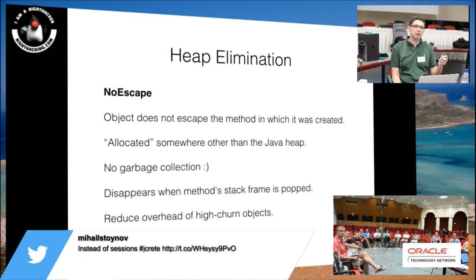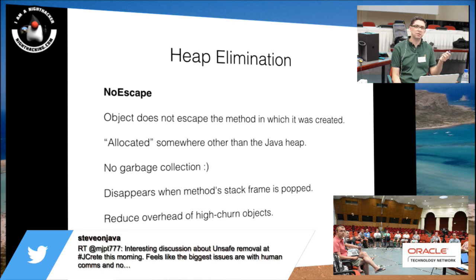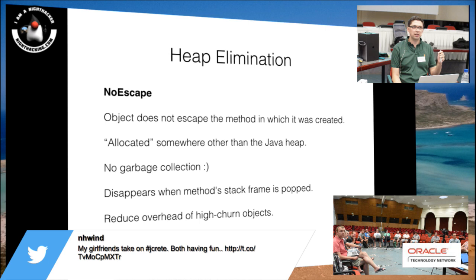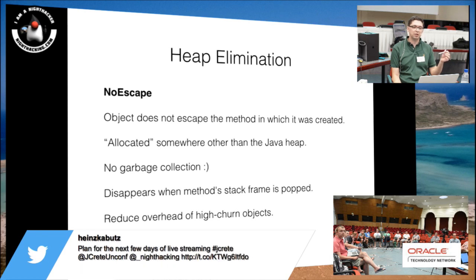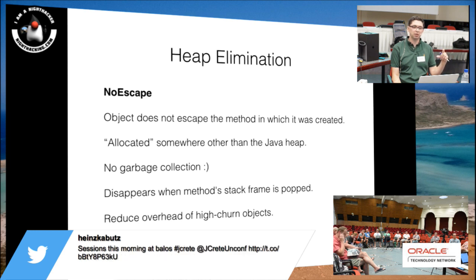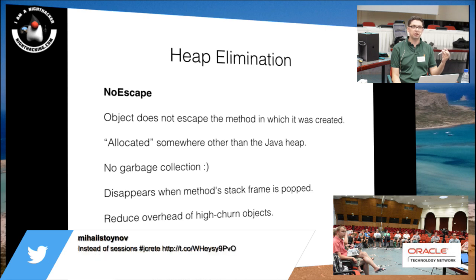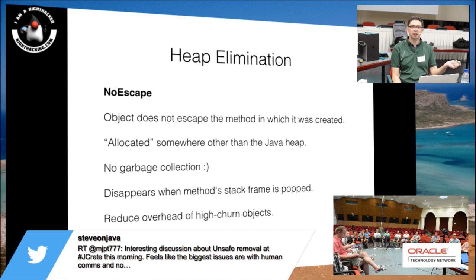Heap elimination detection is a feature I've recently added to the tool. It attempts to identify objects that don't need to be allocated on the Java heap. Within the VM there are three categorizations for objects during escape analysis. The first is 'no escape' — an object the VM has identified as not escaping the method in which it was created. This object can be allocated somewhere other than the Java heap, meaning you don't have to garbage collect it and it simply disappears when the method's frame pops off the stack. This is very useful if you've got a hot loop that would otherwise generate lots of objects at a high allocation rate.